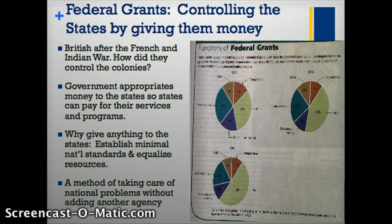Just like your parents are providing for you to make sure you can get what you need in order to live, the federal government is providing for the states in order for them to get what they need to provide services to maintain the public good. And just like your parents can control you with giving you money or withholding money from you, the national government can control the states with giving money or withholding money.